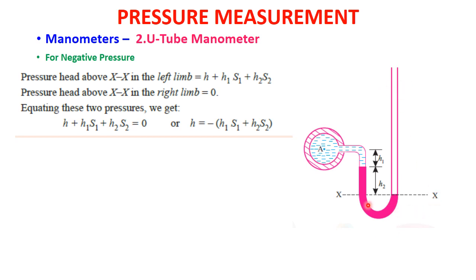For negative pressure (vacuum pressure): the manometric liquid level was above the datum for positive pressure, but now it is below the datum line. At point A, due to the lower (vacuum) pressure, the manometric liquid has risen in the first limb and dropped lower in the second limb. Now h2 is measured from the datum line to the left side, and h1 is above h2.